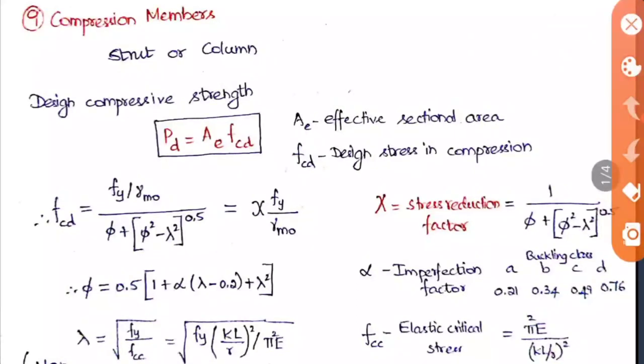The term 1 / (phi + (phi² − lambda²)^0.5) alone is called psi — the stress reduction factor. So we can simplify the formula as FCD = psi × FY / gamma_MO.